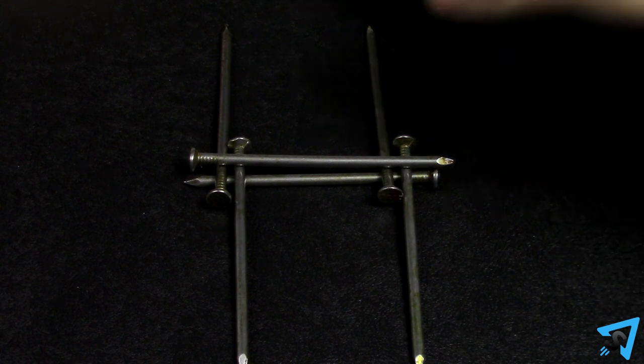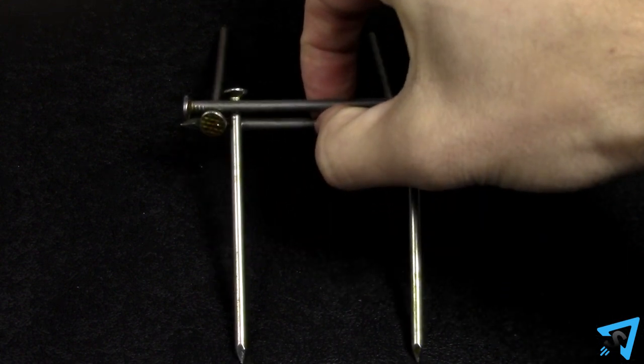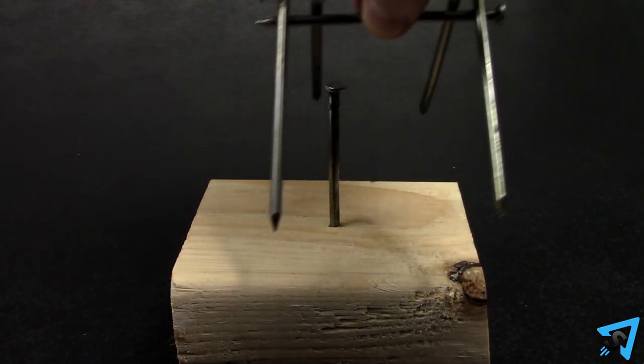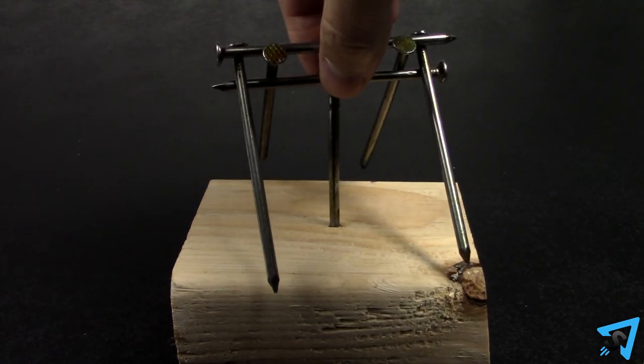Carefully pick up the first nail, the bottom nail, so that all six nails stay together. Then, balance the nail structure on top of the vertical nail.